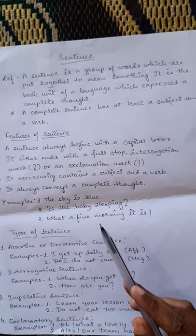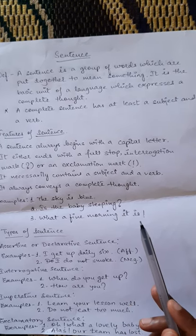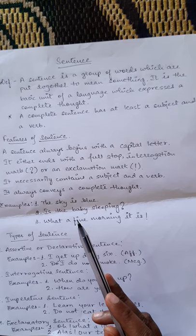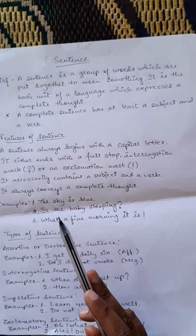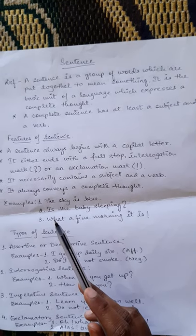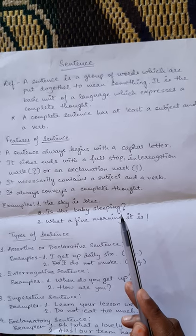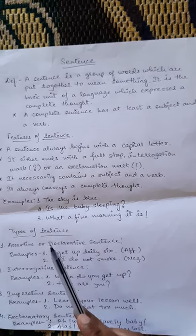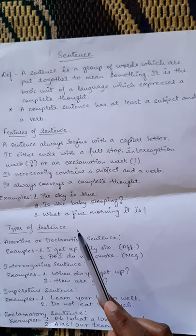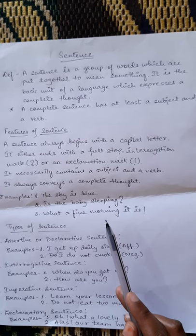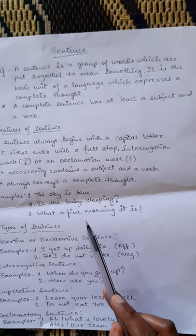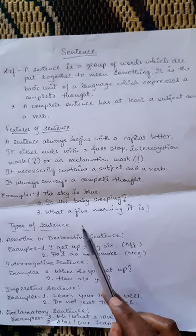Some examples are given here, which are complete with a full stop, interrogation mark, or an exclamation mark. 'The sky is blue.' This is an assertive sentence, which ends with a full stop and starts with a capital letter. The second is an interrogative sentence — it starts with a capital letter and ends with a question mark, in which something is asked. The third starts with a capital letter and ends with an exclamation mark, like 'What a fine morning it is!' So we have learned about assertive, interrogative, and exclamatory sentences with their marks.